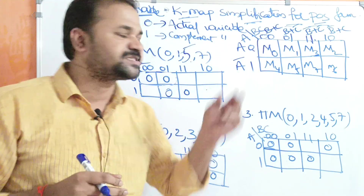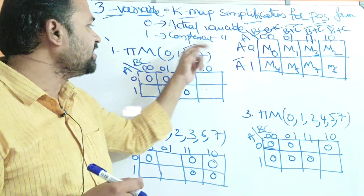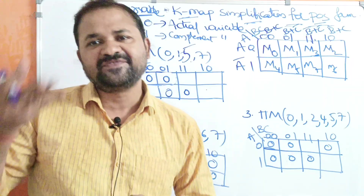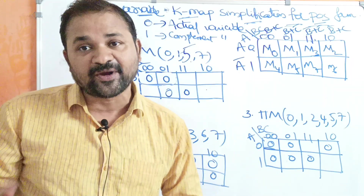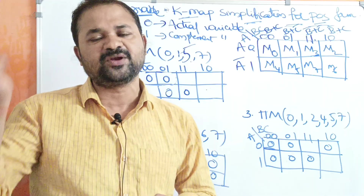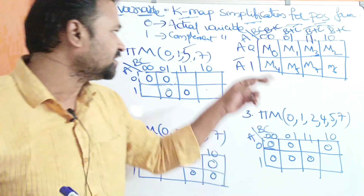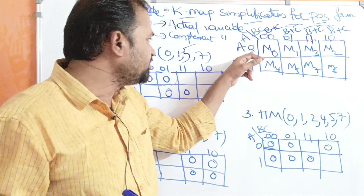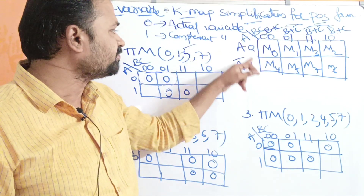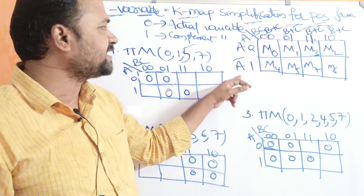In POS form, zero represents the actual variable whereas one represents the complement of the variable. This is the reverse of SOP: in SOP, zero represents the complement and one represents the actual variable. So in POS, zero means actual variable (A) and one means complement of the variable (A bar).